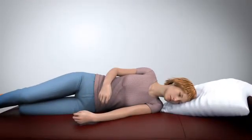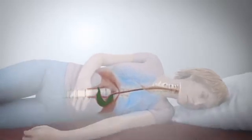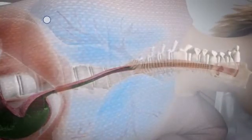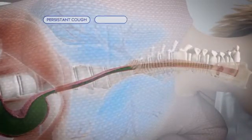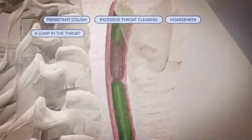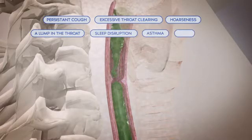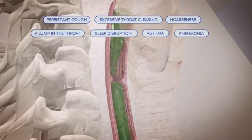Regurgitation of stomach contents into the throat and lungs due to a weak UES happens most often while you are sleeping. It can result in health complications such as a persistent cough, excessive throat clearing, hoarseness, a lump in the throat, sleep disruption, asthma, and pneumonia. It can also cause long-term irritation and damage.